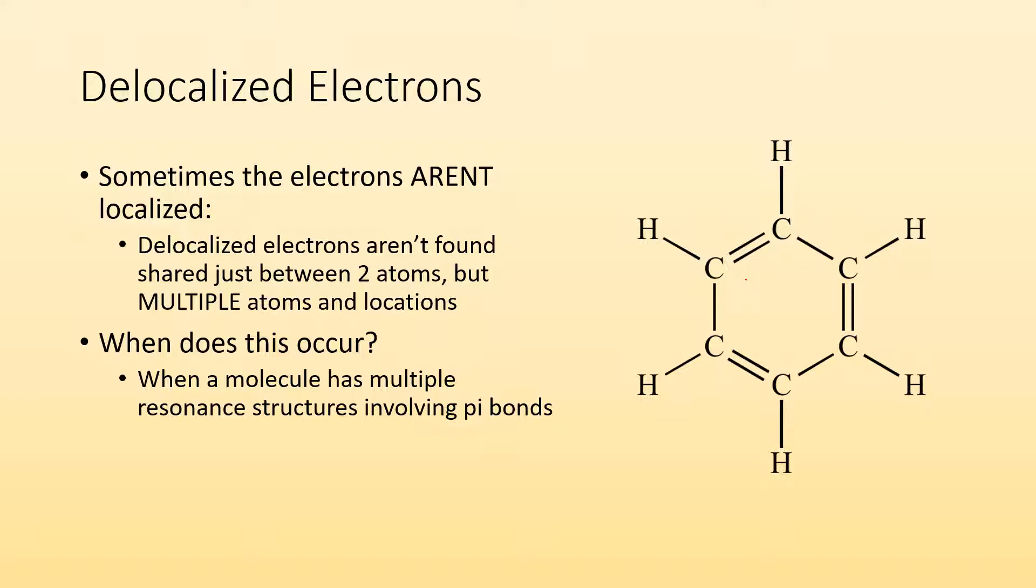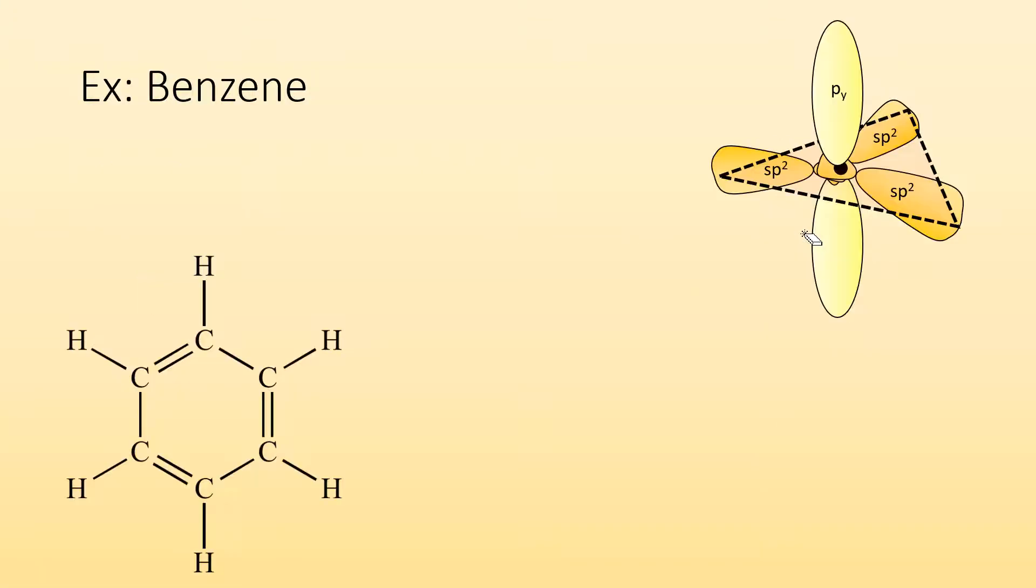Benzene has multiple resonance structures and I'll spoil the surprise, but these electrons aren't just found in between these two carbons. They're found between all of the carbons. Sometimes the shorthand we use for benzene just shows a ring because those electrons are delocalized. And I'll show you what I mean.